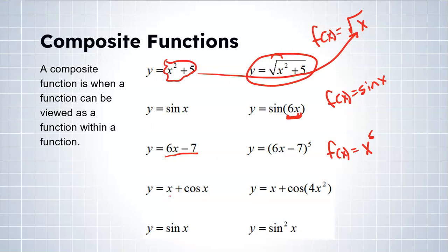In this next example, the overall function is x plus cosine of x, and I took 4x squared and plugged it into that cosine function. And in the last one, I'm plugging sine into x squared — the original function is x squared, so sine of x went into x squared, creating sine of x squared. The simple idea here is that we have a function with another function inside of it. Keep that in mind — it's really important for understanding the chain rule.